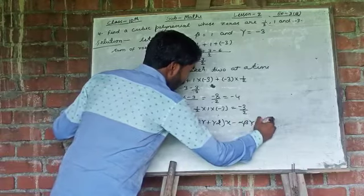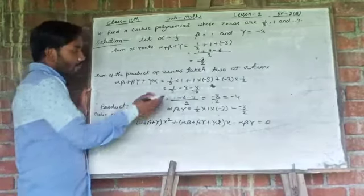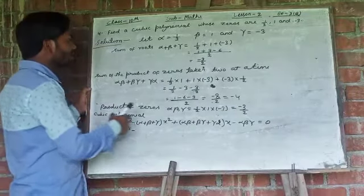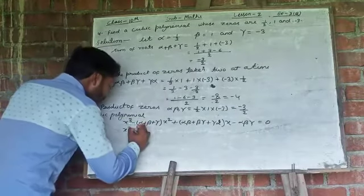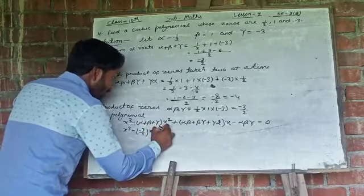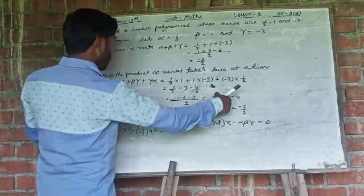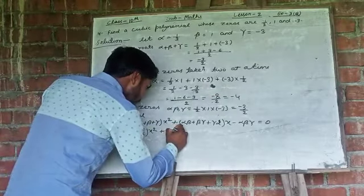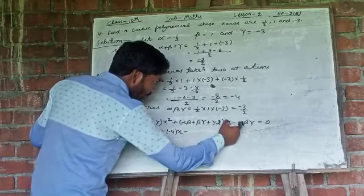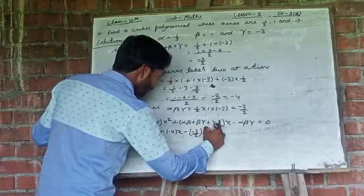Cubic polynomial is x cubed minus alpha plus beta plus gamma into x square plus alpha beta plus beta gamma plus gamma alpha into x minus alpha beta gamma is equal to 0. This is the formula to find out the cubic polynomial. Now we can put the given value. So here x cubed minus the value of alpha plus beta plus gamma is minus 3 by 2. So minus 3 by 2 x square plus alpha beta plus beta gamma plus gamma alpha, it is minus 4, so minus 4 into x and this one minus and minus 3 by 2 is equal to 0.